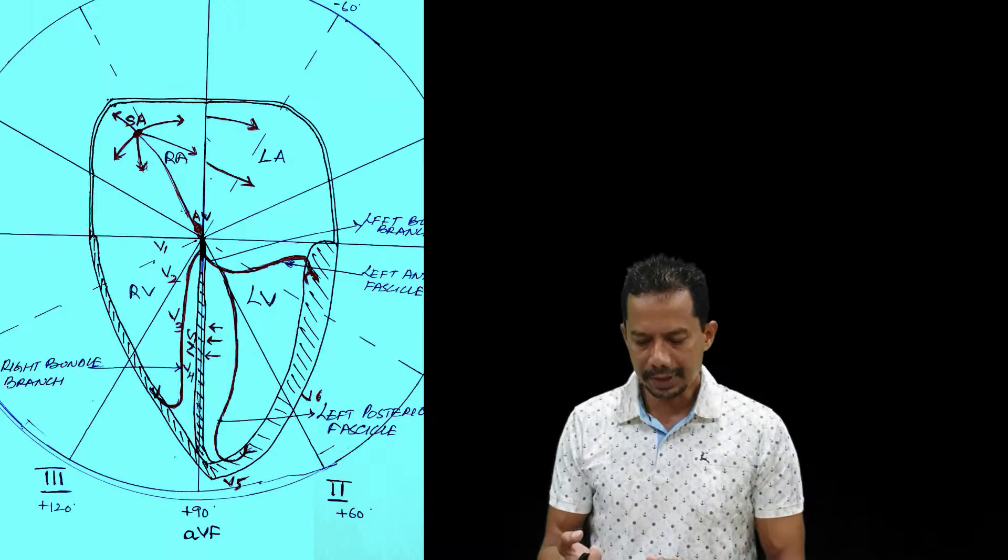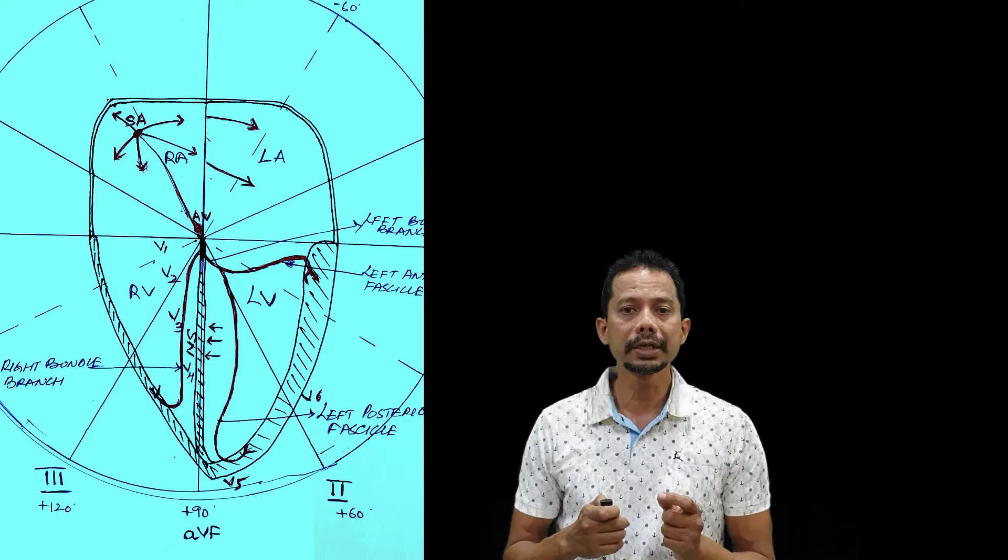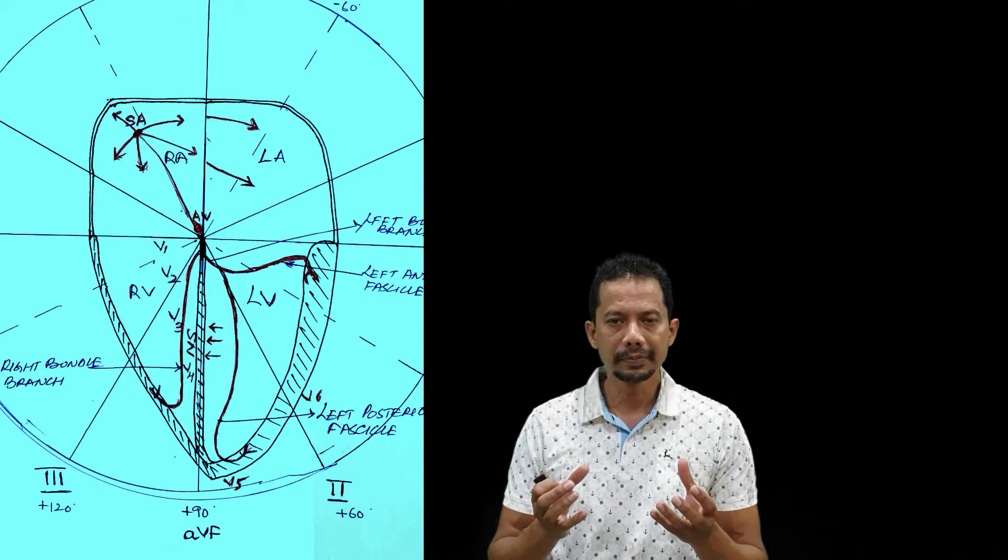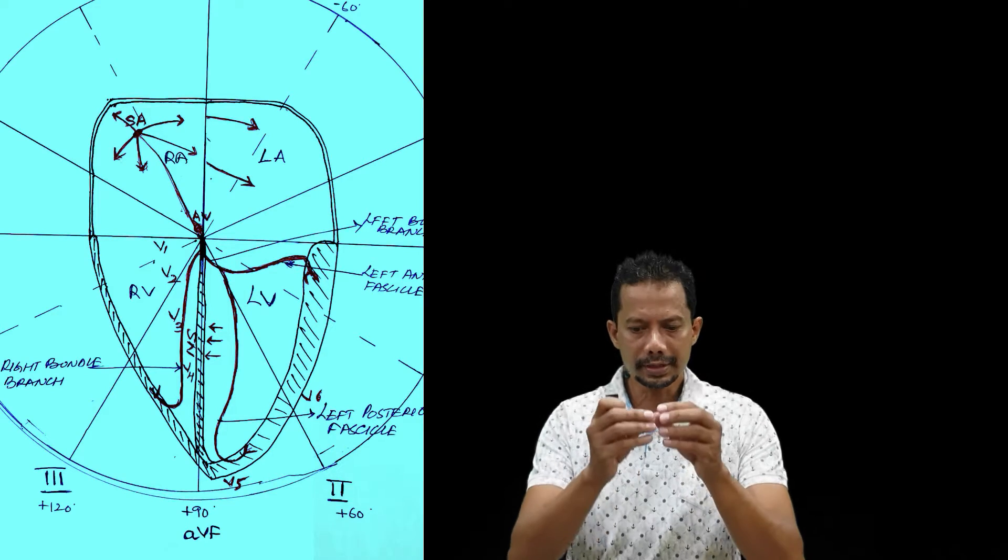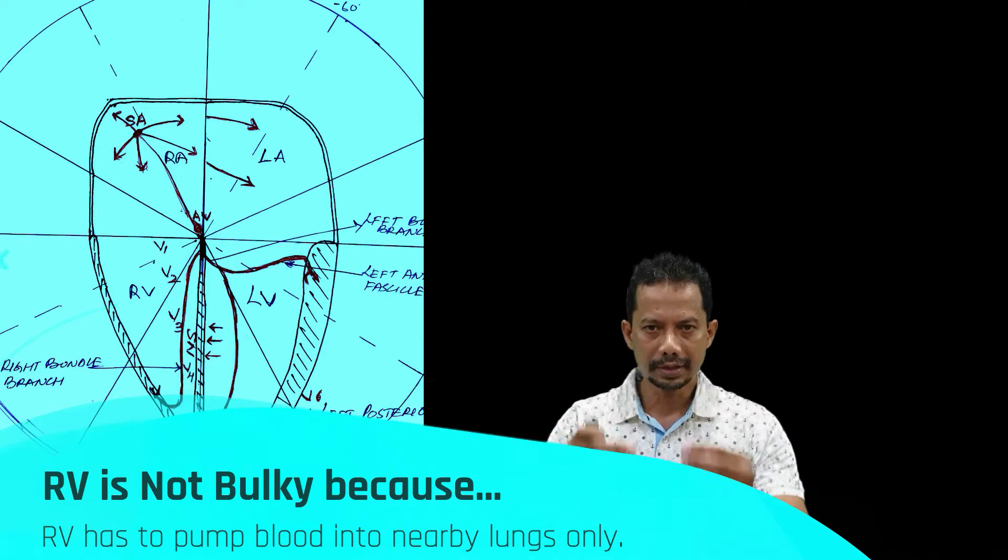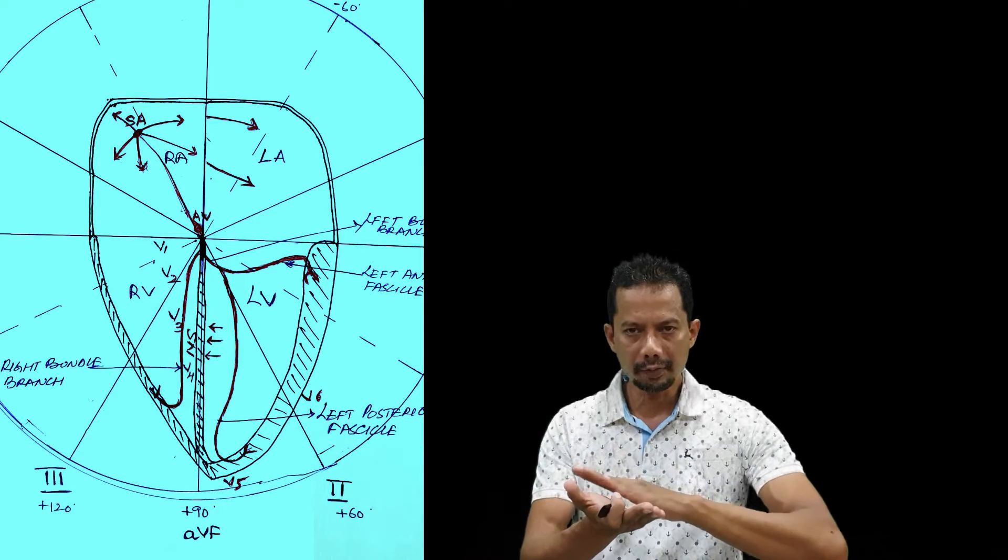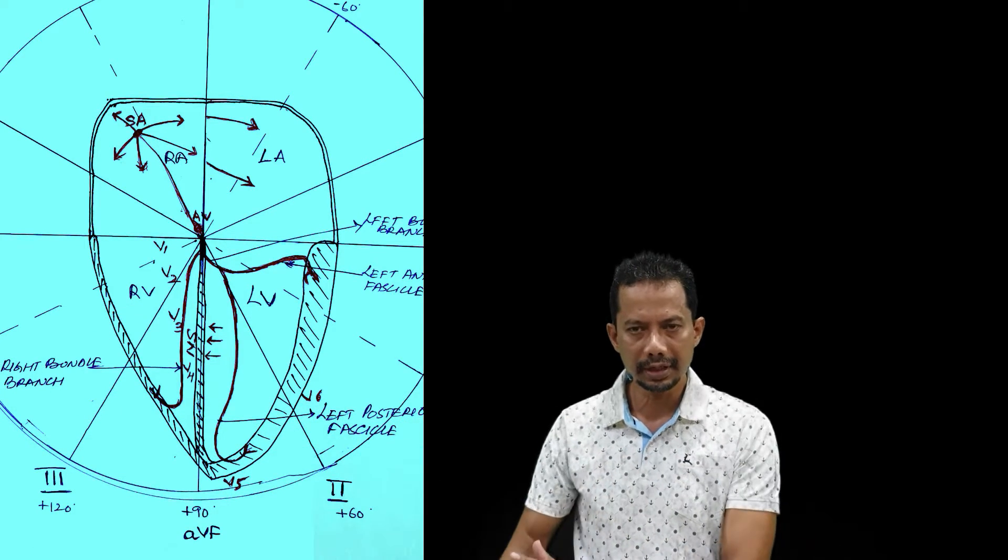It is important to note that the IVS is not a very bulky structure because it is thin. It is like a wall between the right ventricle and the left ventricle.